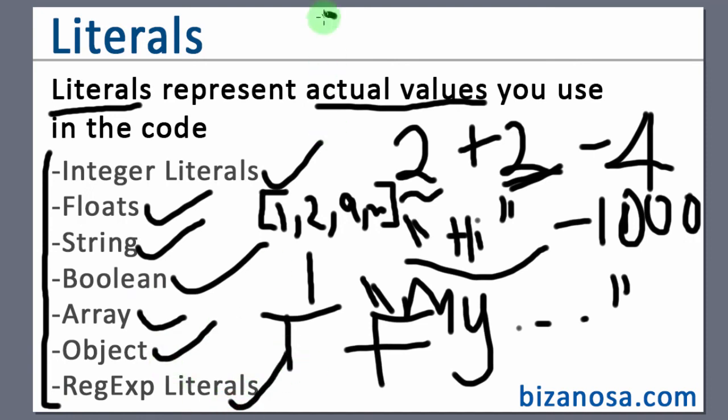So objects, objects are key value pairs. So maybe you have an item there, key one, and then the value.